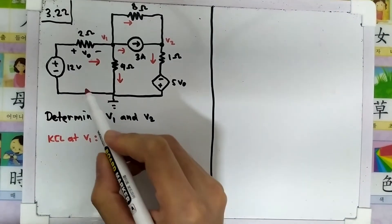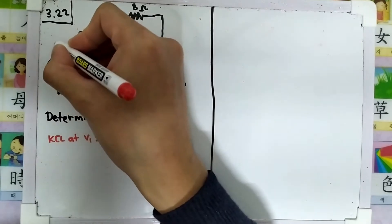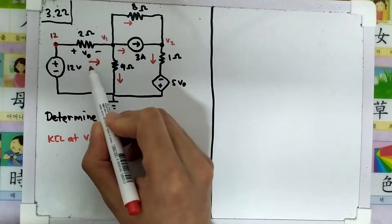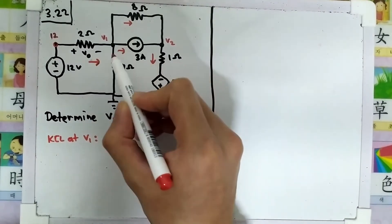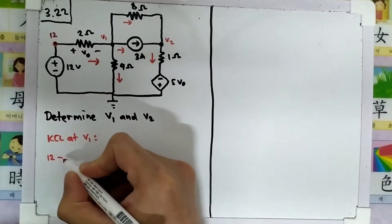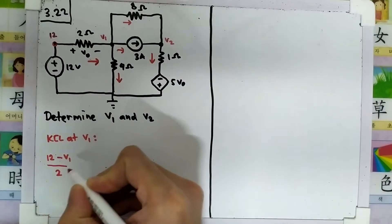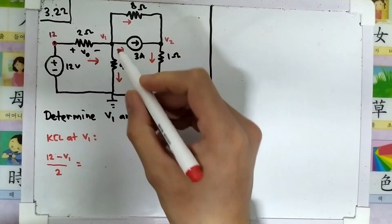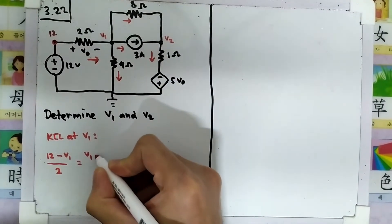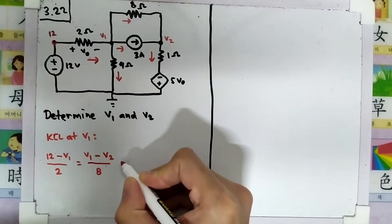First we need to know the voltage here — there is a voltage source and it is 12 volts from the ground, so the voltage here will be 12. The current that goes in is only this current; the other three are going out. So the current that goes in is (12 minus v1) divided by 2, and this equals v1 minus v2 divided by 8, plus 3.